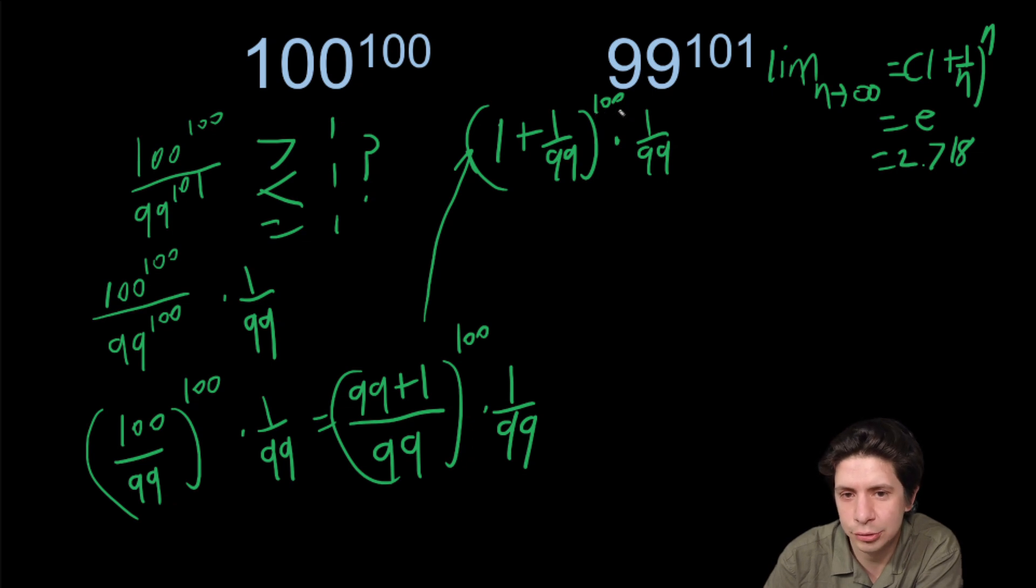Now the issue here is we have to 100 power, but we have a 99. So which one is N? I'm going to keep this as N and split it off. So make an extra one of these to be on its own.